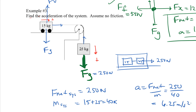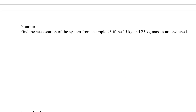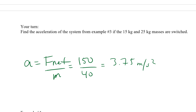Another day we might solve for the tension in the system individually. For your turn: switch the 15 and 25 kilogram masses and find the new acceleration. The answer: F-net becomes the gravity from the smaller mass — 150 newtons — divided by 40 kilograms, giving 3.75 meters per second squared.